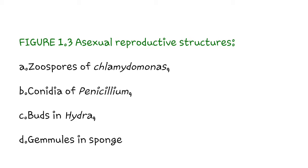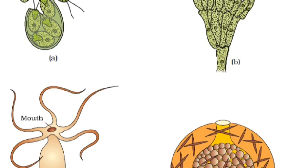Let's start with Figure 1.3, in which asexual reproductive structures are given. A is zoospores, B is conidia of Penicillium, C is buds in Hydra, and the last one is gemmules in sponges.